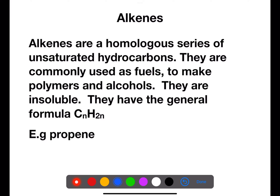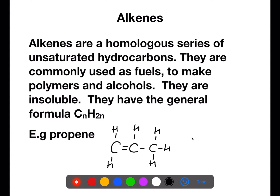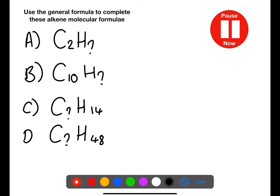The next family we're looking at are the alkenes. They're a homologous series of unsaturated hydrocarbons. They're commonly used as fuels and to make polymers and alcohols. They're also insoluble in water. They have a general formula CnH2n. This means that for every carbon there are two hydrogens, such as in propene C3H6. Pause the video now and use the general formula to complete these alkene molecular formulae.